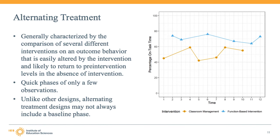The final single case design eligible for review by the WWC is the alternating treatment design. This design is characterized by switching rapidly between two or more treatment conditions. These designs have quick phases of only a few observations. The reason for the rapid alternation is that there is some concern that repeated testing might lead to carryover between conditions. In these designs, effect replication occurs at each transition between treatments.